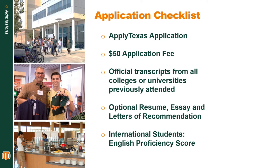As far as the application process itself, it is fairly straightforward, and this is an application checklist you can follow as you move through the process. The first step is to apply via Apply Texas — there is a $50 application fee — and then you need to follow up with official transcripts from all previously attended colleges and universities. You have the option to turn in a resume, essay, and up to three letters of recommendation, and international students will be asked to provide an English proficiency score.